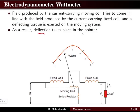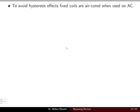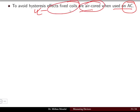In the electrodynamometer wattmeter, the current-carrying moving coil tries to align with the field produced by the current-carrying fixed coil, and a deflecting torque is exerted. One field is produced by the current coil and another by the voltage coil; their interaction results in the deflecting torque. The fixed coils are air-cored rather than ferromagnetic to avoid hysteresis effects when used for AC.